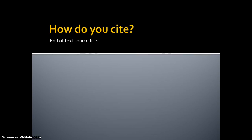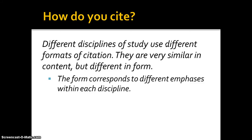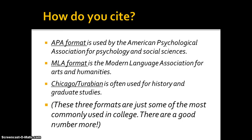Different disciplines of study use different formats for citation, which can be confusing. They're very similar in content but different in form. APA — the American Psychological Association — is used for psychology and social sciences. MLA — the Modern Language Association — is used generally for arts and humanities. Chicago or Turabian is often used for history or graduate studies. There are many other formats as well, and some examples are in the back of your Little Brown Handbook.